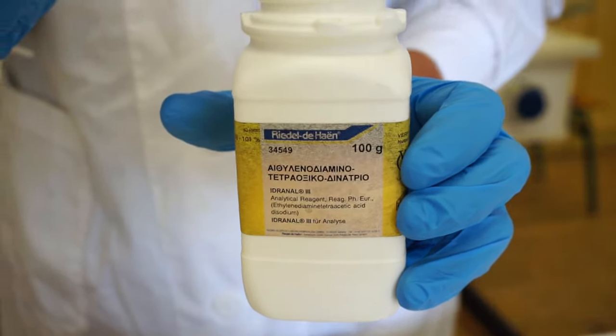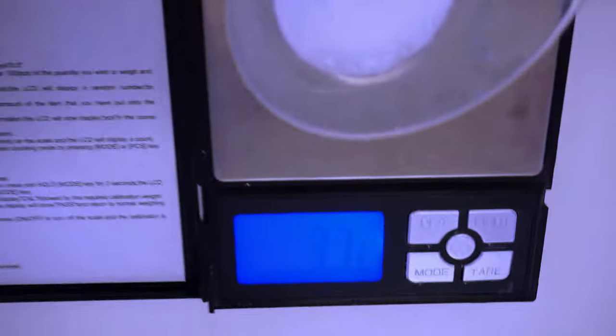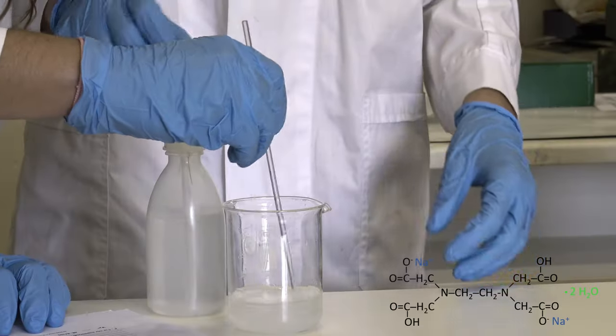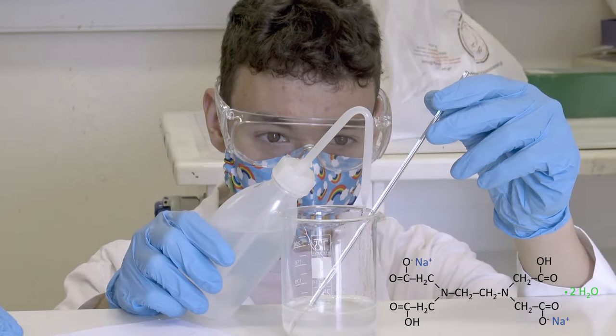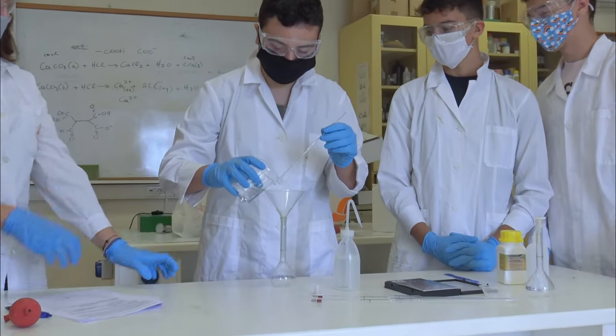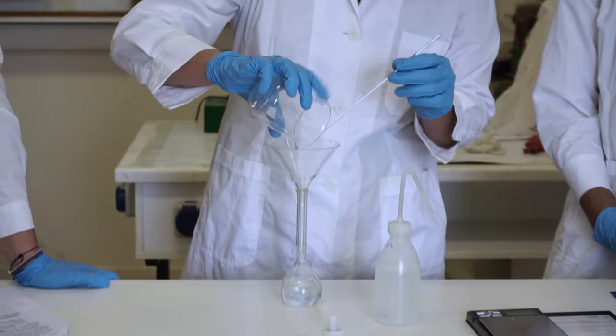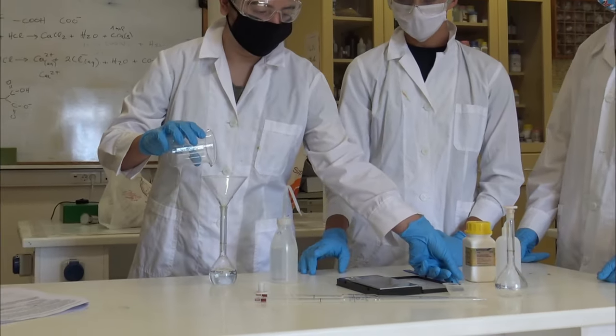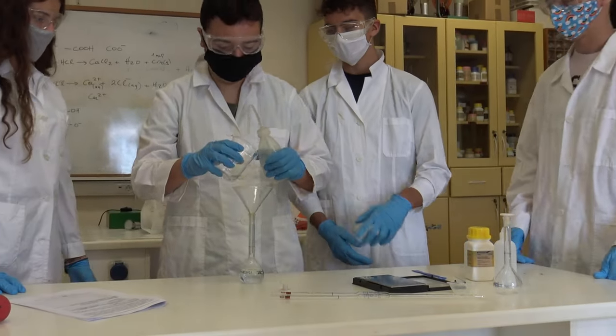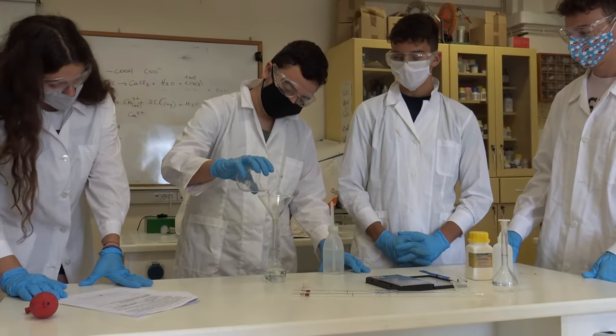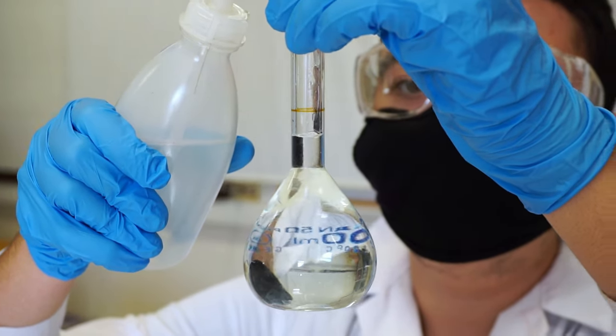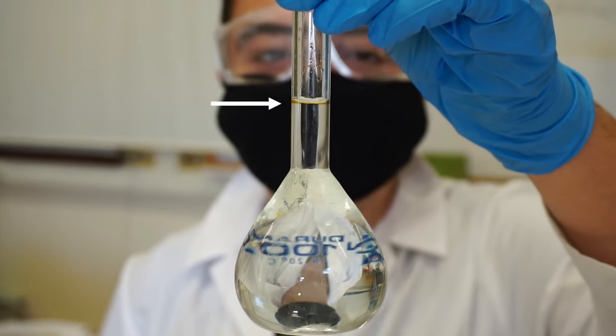First we prepare 100 ml of a 0.1 molar EDTA solution. EDTA is a chelating agent, i.e., a chemical compound that binds tightly to metal ions. We use the ethylenediaminetetraacetic acid disodium salt. Students do their best to avoid EDTA losses. The center of the concave meniscus should be exactly on the 100 ml line at eye level.